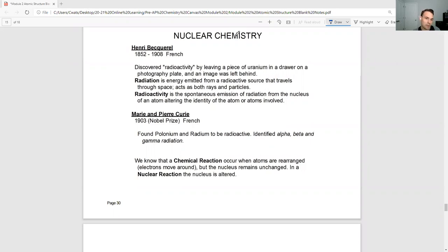First off, a couple of important people. Henry discovered radioactivity by leaving a piece of uranium in a drawer with a photography plate and an image was left behind. Radiation is energy emitted from a radioactive source that travels through space, acting both as rays and particles. Radioactivity is the spontaneous emission of radiation from the nucleus of an atom, altering the identity of the atom or atoms involved. Nuclear chemistry has to do with the nucleus, so we're changing the nucleus.